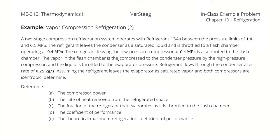A two-stage compression refrigeration system operates with R134A between pressure limits of 1.4 and 0.1 megapascals. The refrigerant leaves the condenser as a saturated liquid and is throttled to a flash chamber operating at 0.4 megapascals. The refrigerant leaving the low-pressure compressor at 0.4 megapascals is also routed to the flash chamber. The vapor in the flash chamber is then compressed to the condenser pressure by the high-pressure compressor, and the liquid is throttled to the evaporator pressure. Refrigerant flows through the condenser at a rate of 0.25 kilograms per second. Assuming the refrigerant leaves the evaporator as saturated vapor and both compressors are isentropic, determine the compressor power, the rate of heat removed from the refrigerated space, the fraction of the refrigerant that evaporates as it is throttled to the flash chamber, the coefficient of performance, and the theoretical maximum refrigeration coefficient of performance.